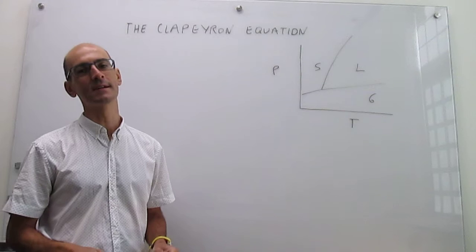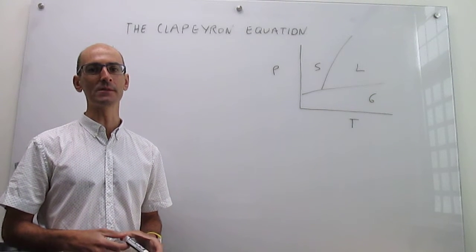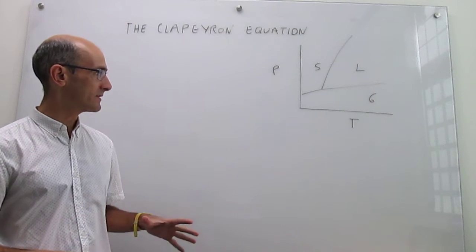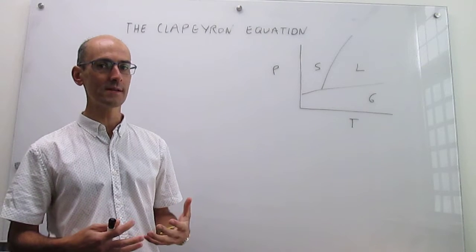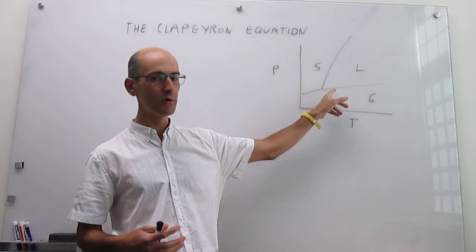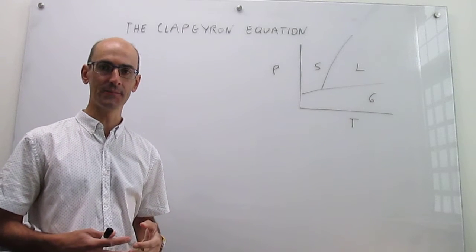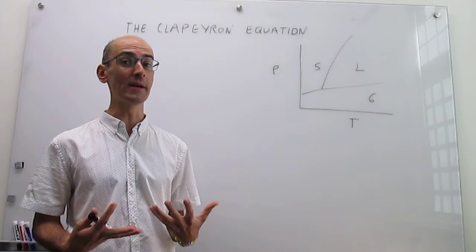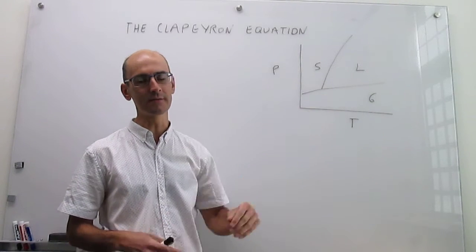In this video, we discuss quantitative aspects of phase diagrams by deriving the Clapeyron equation. The Clapeyron equation is a way to quantitatively determine what the slope of any of the phase boundaries in a phase diagram is. Let's try to see if we can use thermodynamics to learn more about the significance of these phase boundaries.